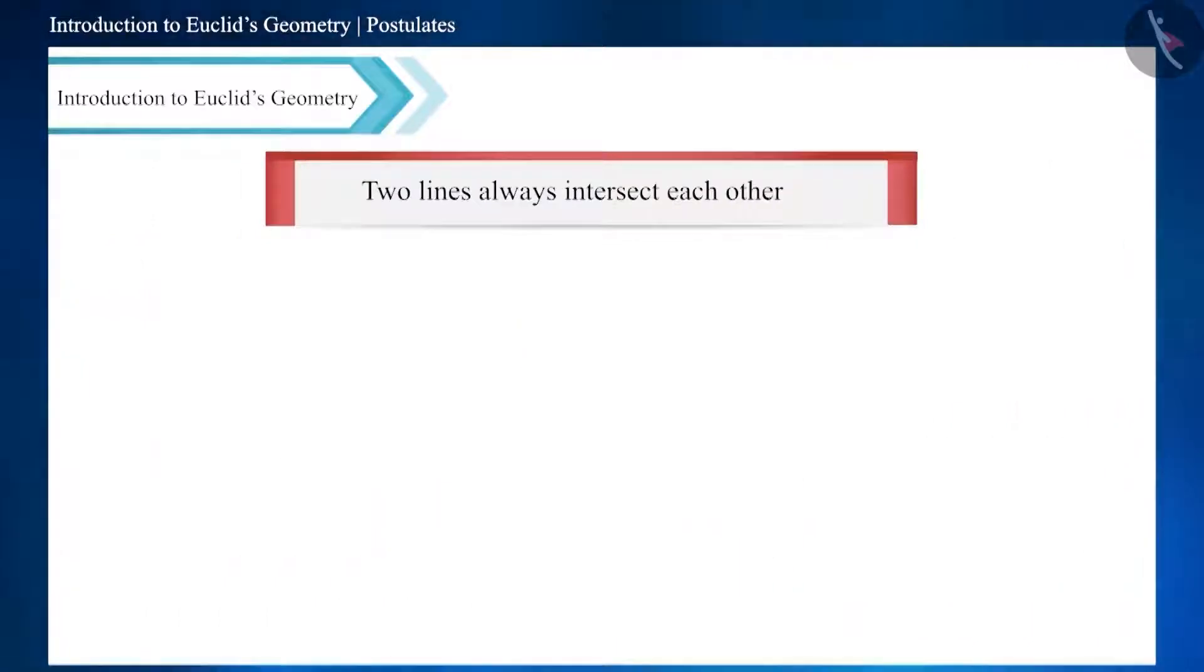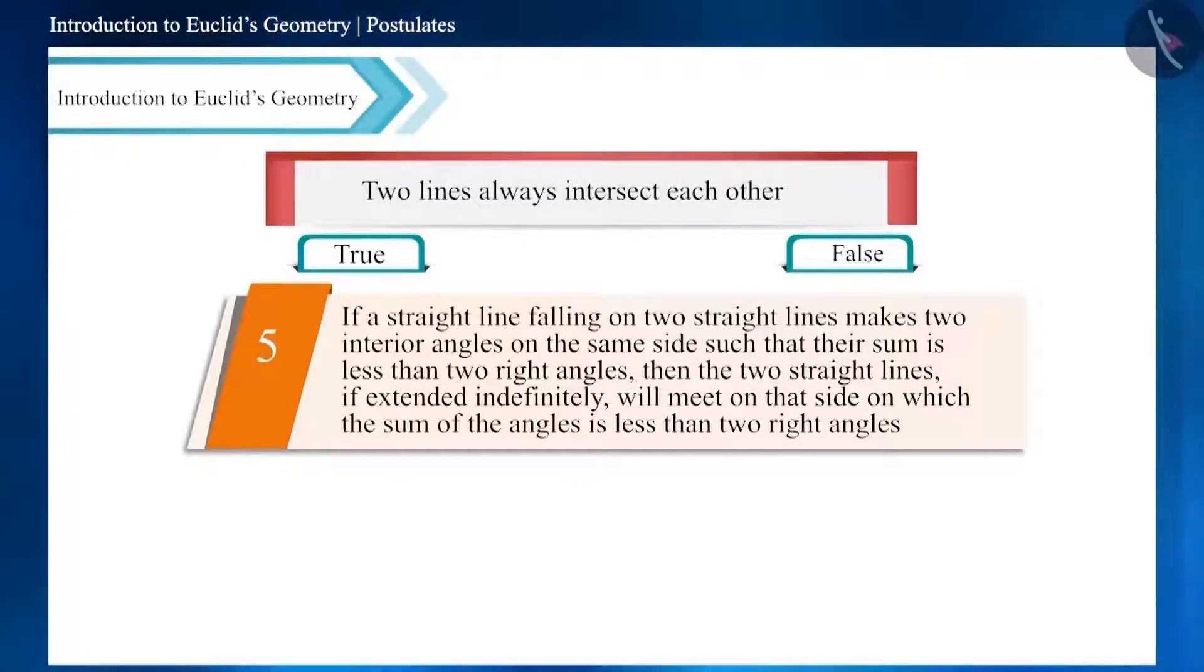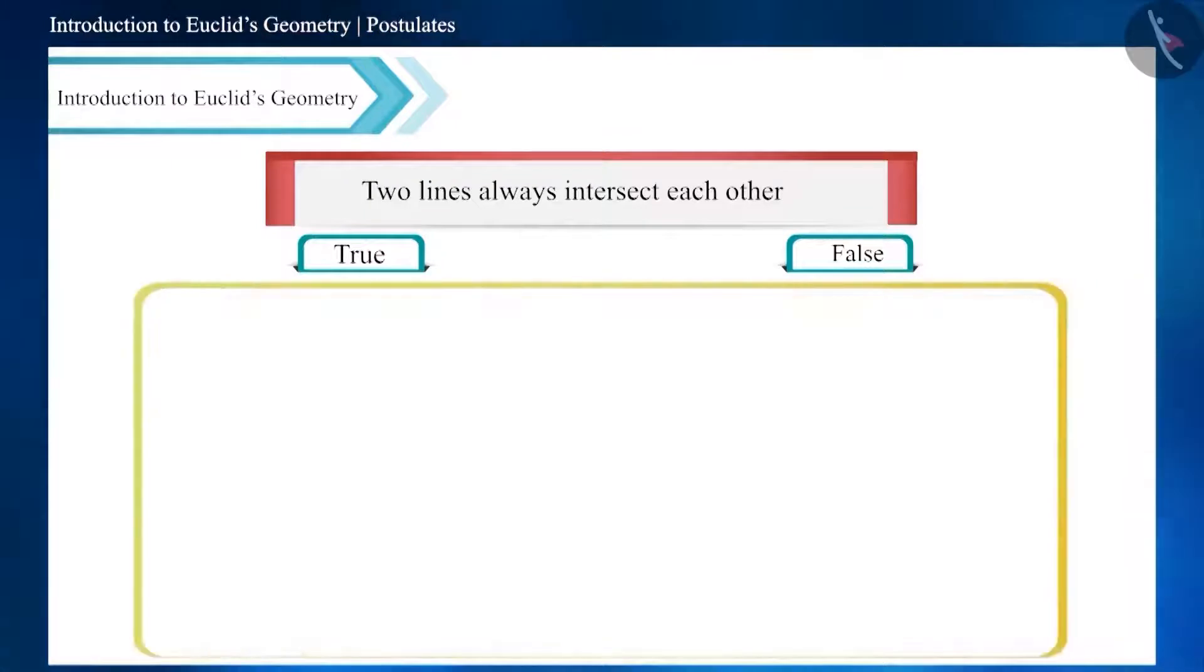Two lines always intersect each other. Is this statement true or false? Friends, you can pause the video and think of the answer to this question. The fifth postulate of Euclid says that if a straight line falling on two straight lines